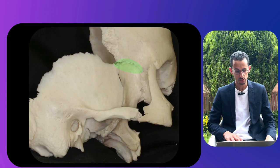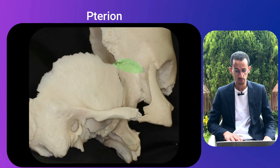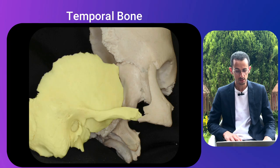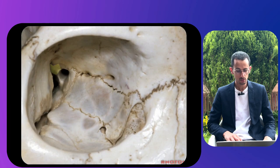Looking at a lateral view of the skull: this is the pterion — a very important anatomical landmark for the well-known pterional craniotomy. We can see the sphenosquamosal suture, the temporal bone, the temporal fossa, the zygoma, and the zygomatic arch.